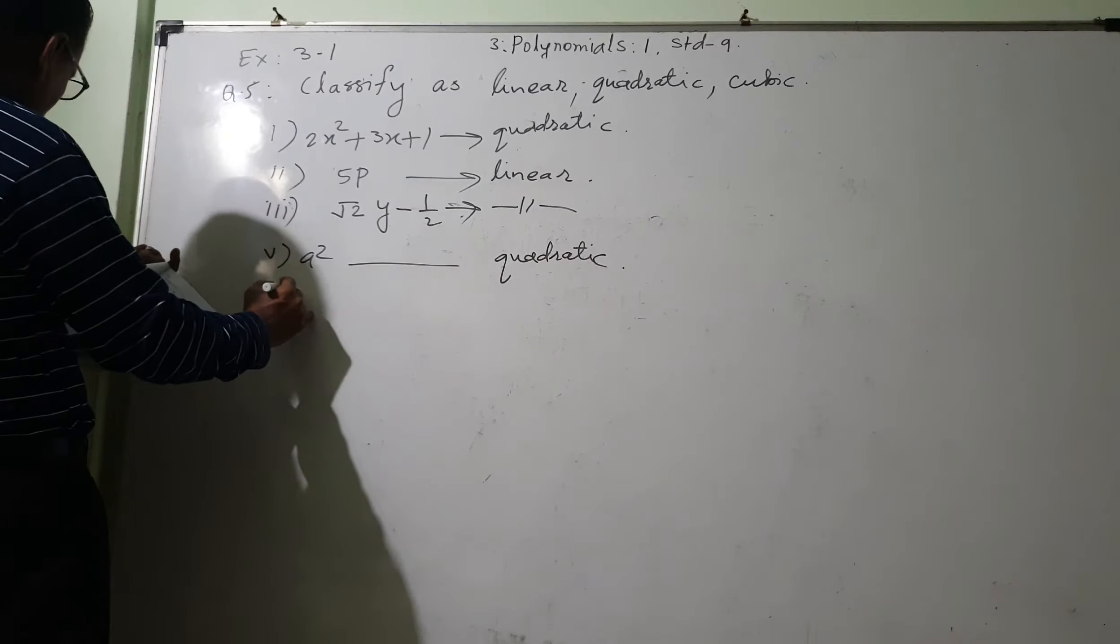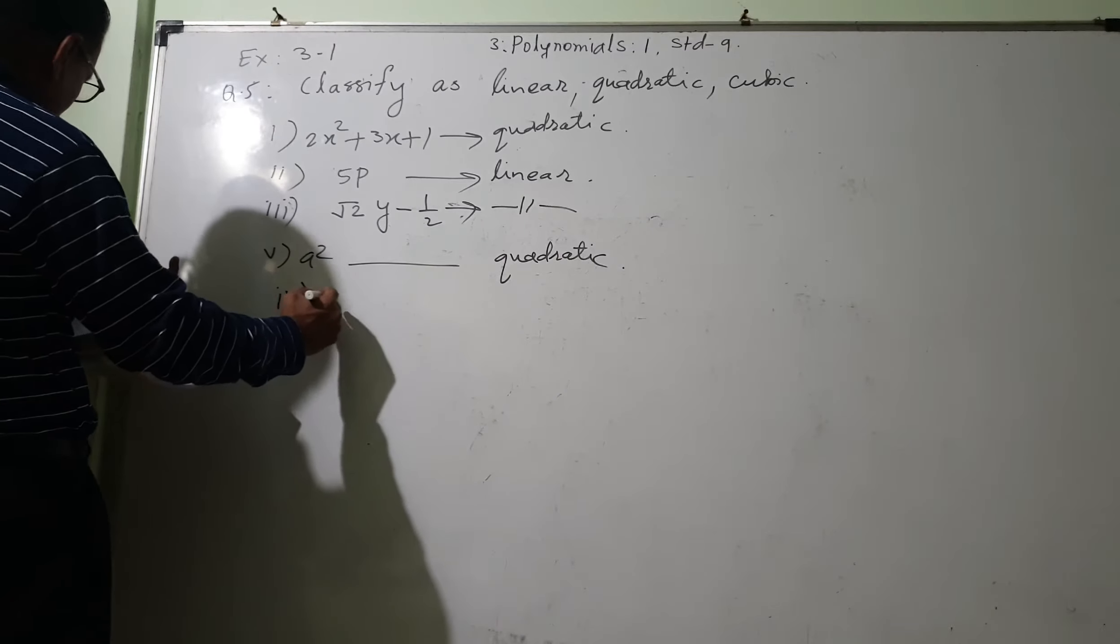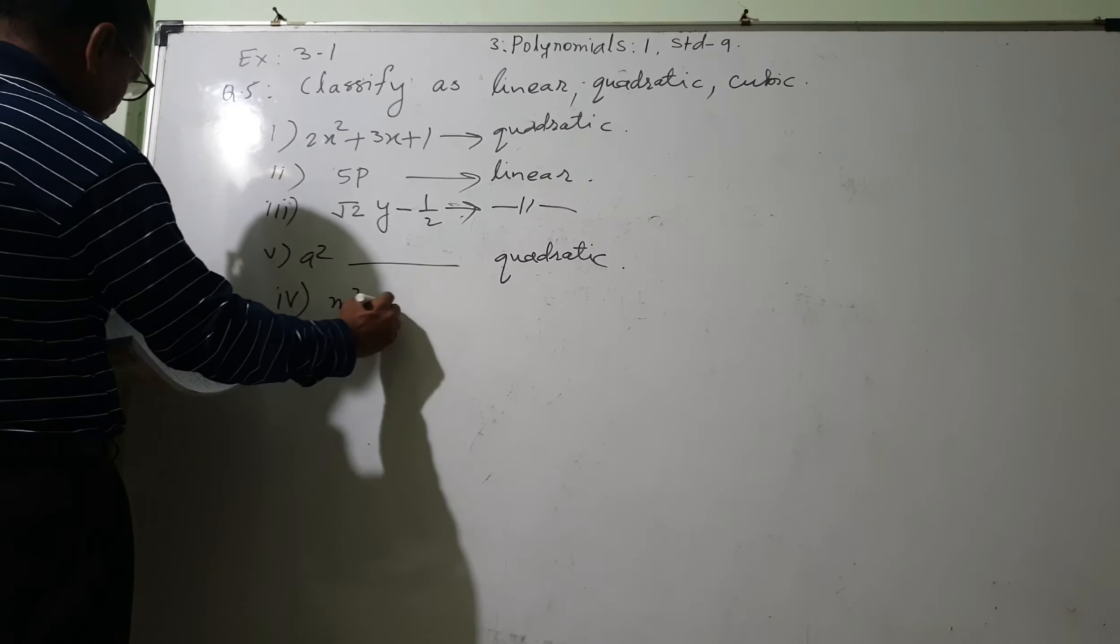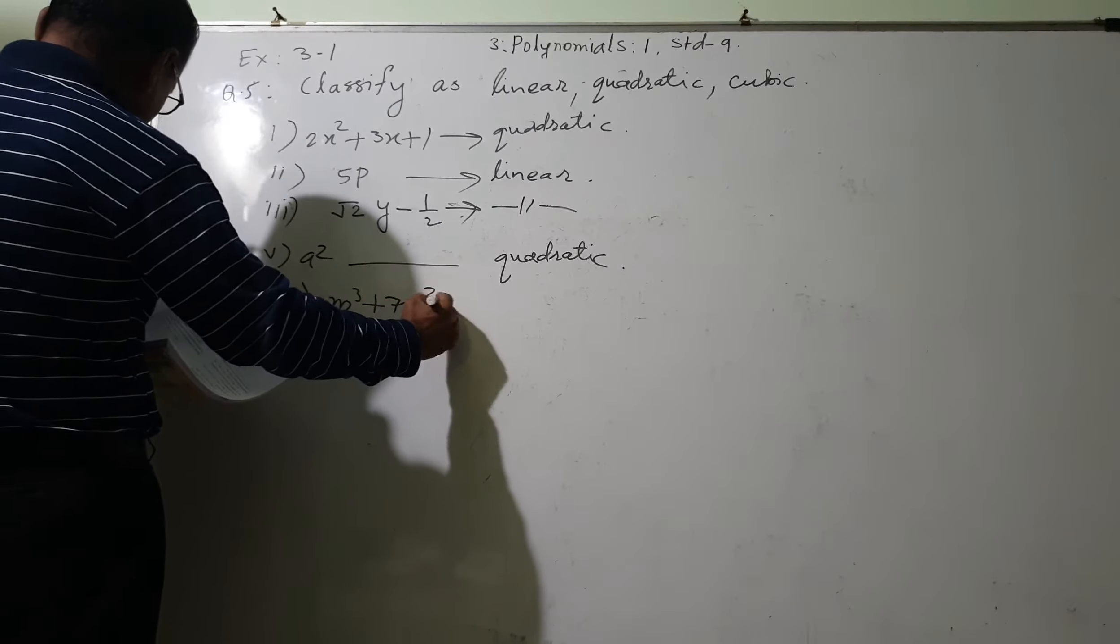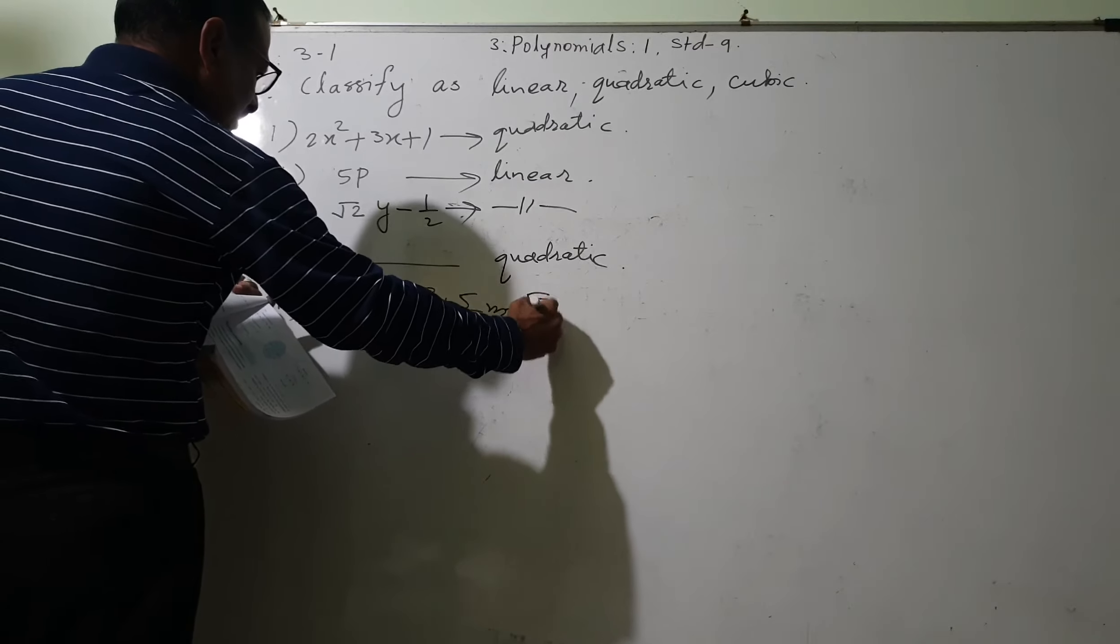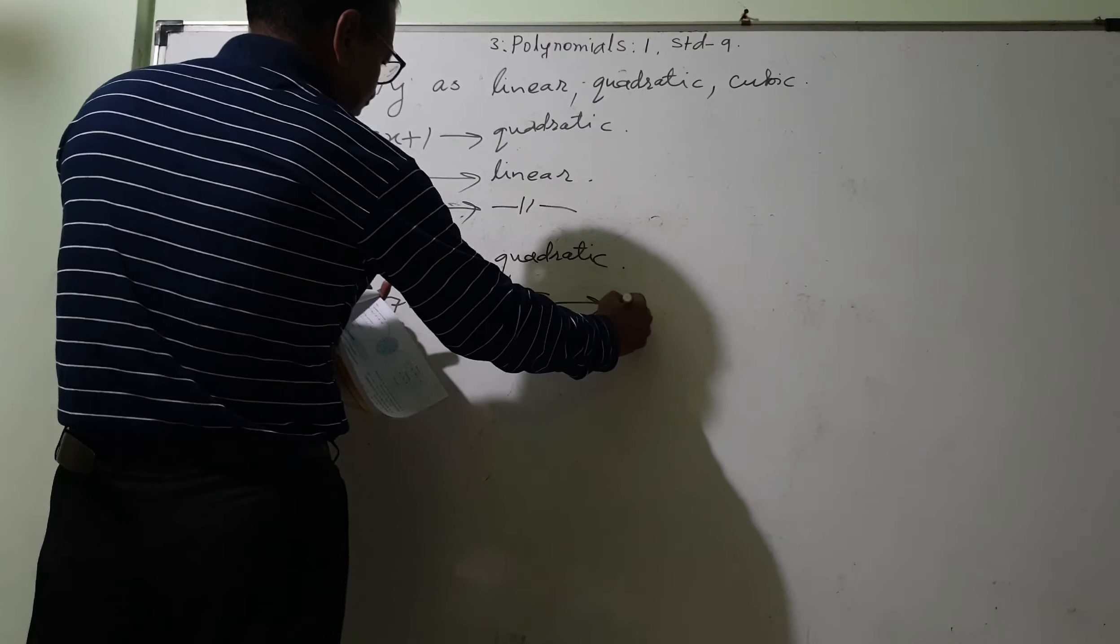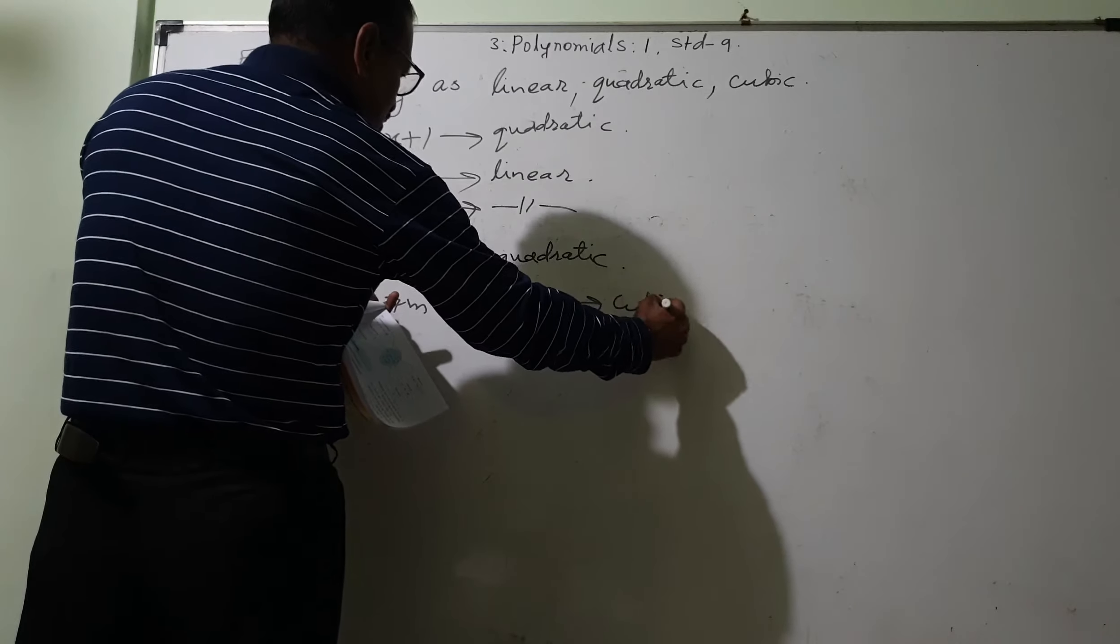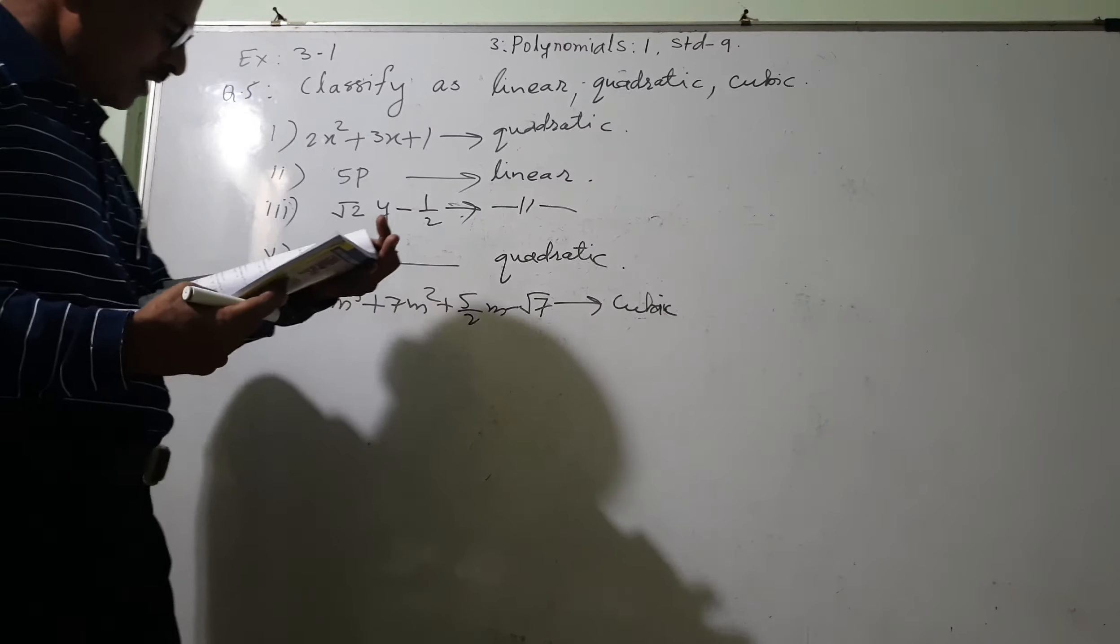And this way, if it is cube, then fourth one is the cubic: m cube plus 7m square plus 5 upon 2m minus root 7, and this is cubic. Cubic means the power is 3. So this way...